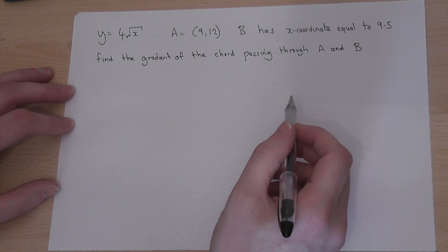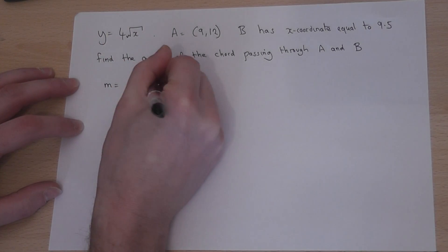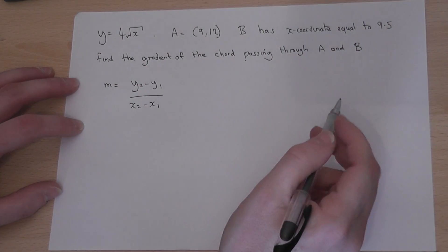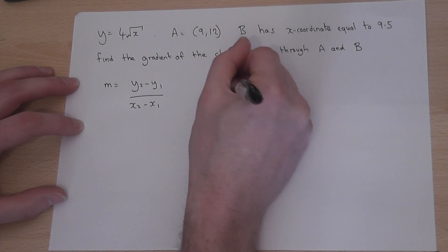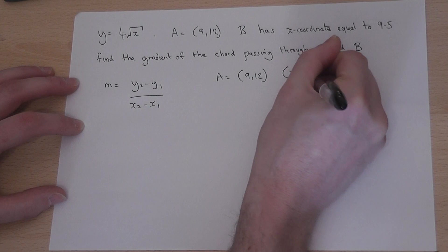To find the gradient between two coordinates, we use the formula m equals y2 minus y1 over x2 minus x1. We know one coordinate which is A, so A is the coordinate (9,12), so we know coordinate x1 and y1.